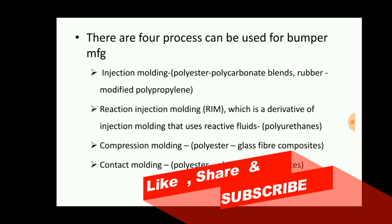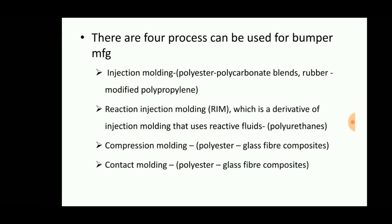In reaction injection molding, reactive fluids — that is polyurethanes — are used instead of polycarbonate beads. In compression molding, polyester glass fiber composites are used. The compression process forms the shape of the bumper. In contact molding, polyester glass fiber composites are also used.